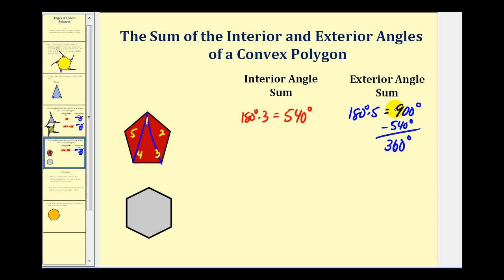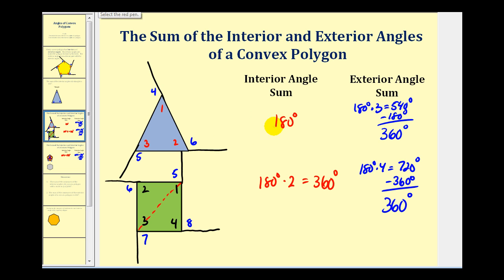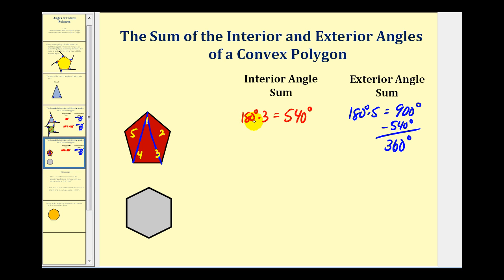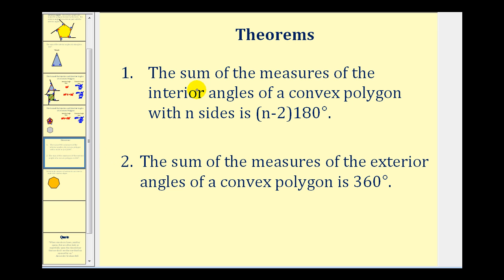Let's look for a pattern. A triangle (three sides) gives 180 times one; four sides gives 180 times two; five sides gives 180 times three. This leads to the theorem: the sum of the measures of the interior angles of a convex polygon with n sides is (n minus two) times 180 degrees. And the sum of the measures of the exterior angles of a convex polygon is always 360 degrees.